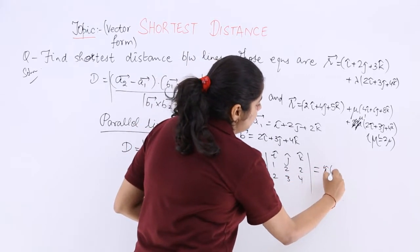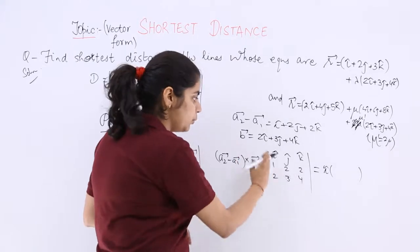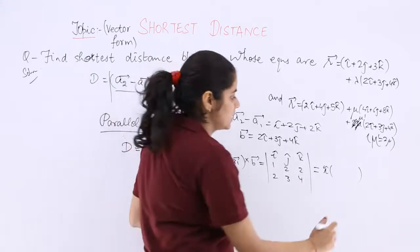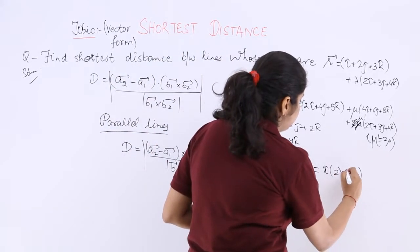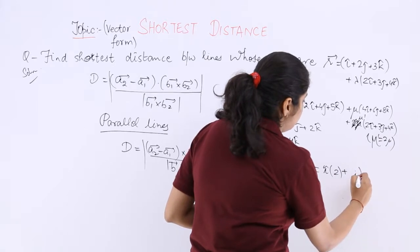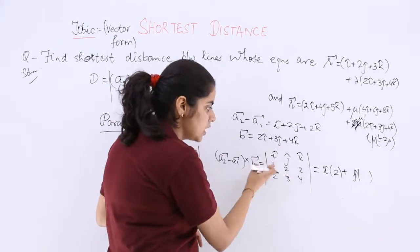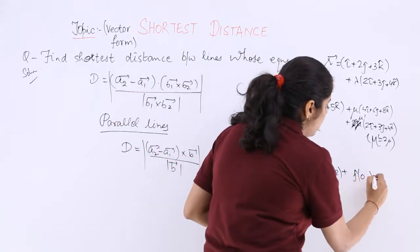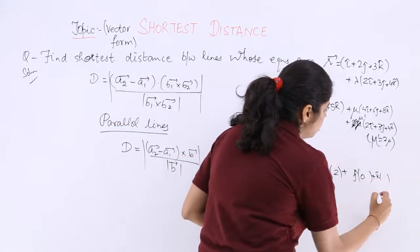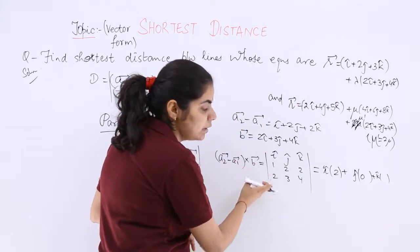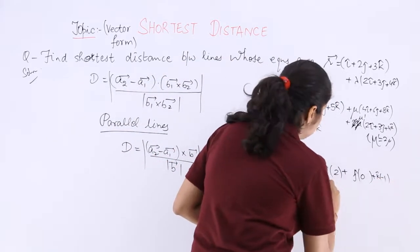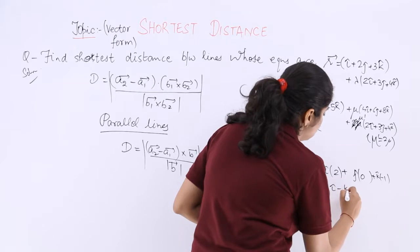So i cap, remove this, 8-6 is 2. Plus j cap, remove this, 4-4 is 0. Plus k cap, 3-4 is minus 1. So it is coming out to be 2i minus k cap.